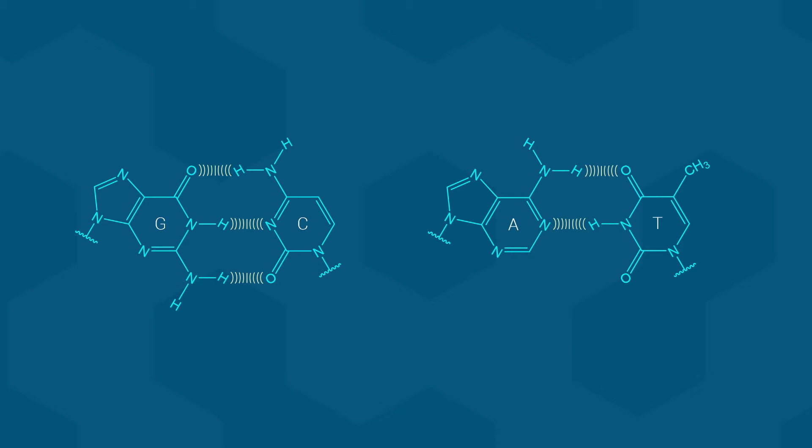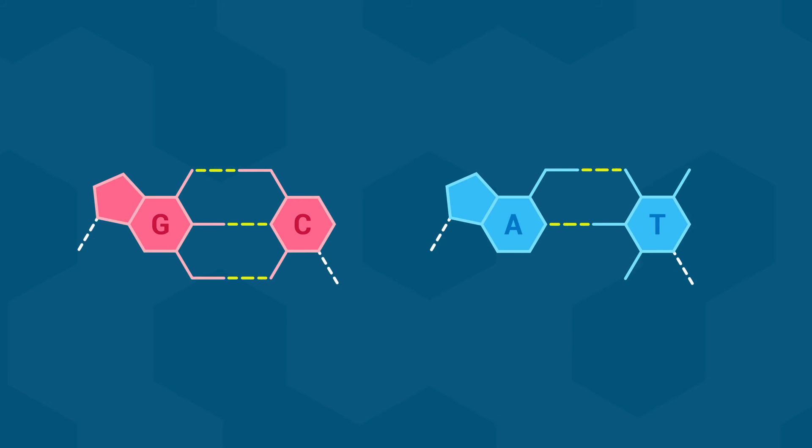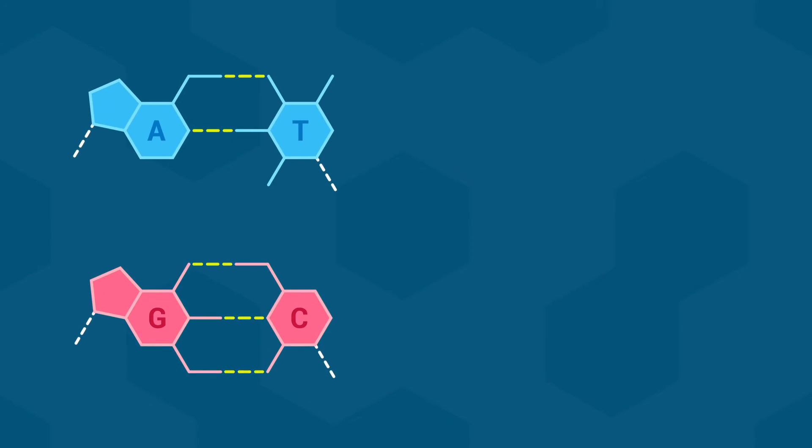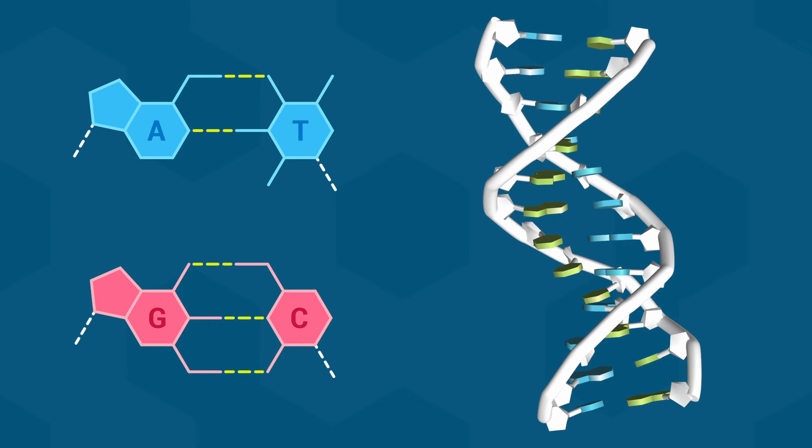For simplicity, let me show the two base pairs like this going forward. Please note that the white dashed lines represent the connections to the sugar-phosphate backbones. One of the really interesting things about the structure of DNA is that when the bases pair up properly, the two strands twist around each other along the entire length of the chains. This results in the well-known double-stranded helix.